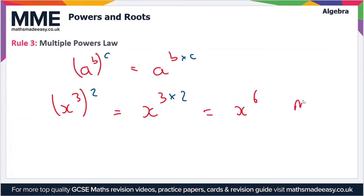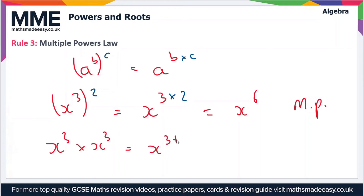We can also prove this using the multiplication law. X cubed squared is equal to x cubed times x cubed, which equals x to the three plus three, which is x to the six. So the multiple powers law is essentially just an extension of the multiplication law, but you get the same answer either way.